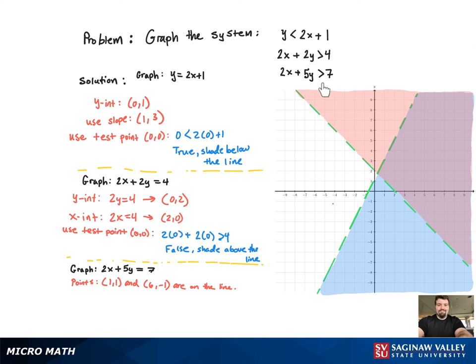Again, it's going to be a dotted line because it's strictly greater than. Notice all of them are strictly less than or greater than, so they're all dotted lines.